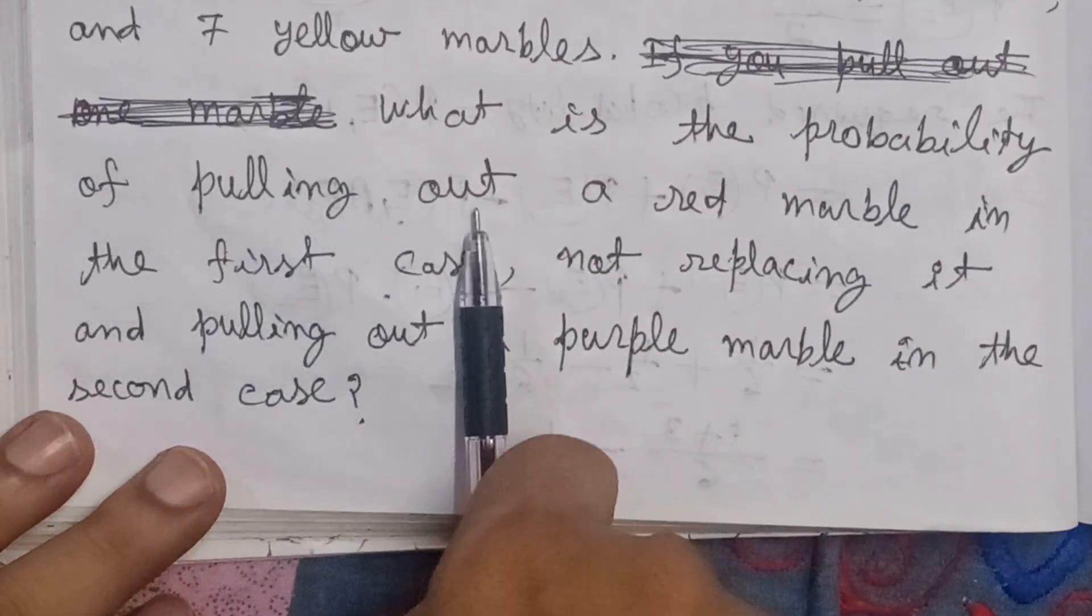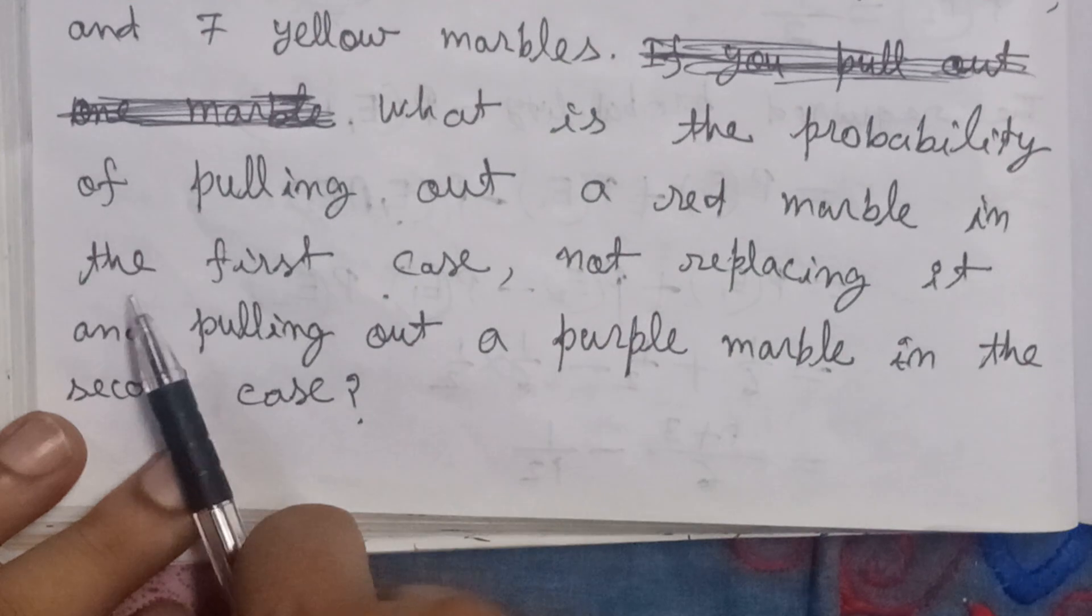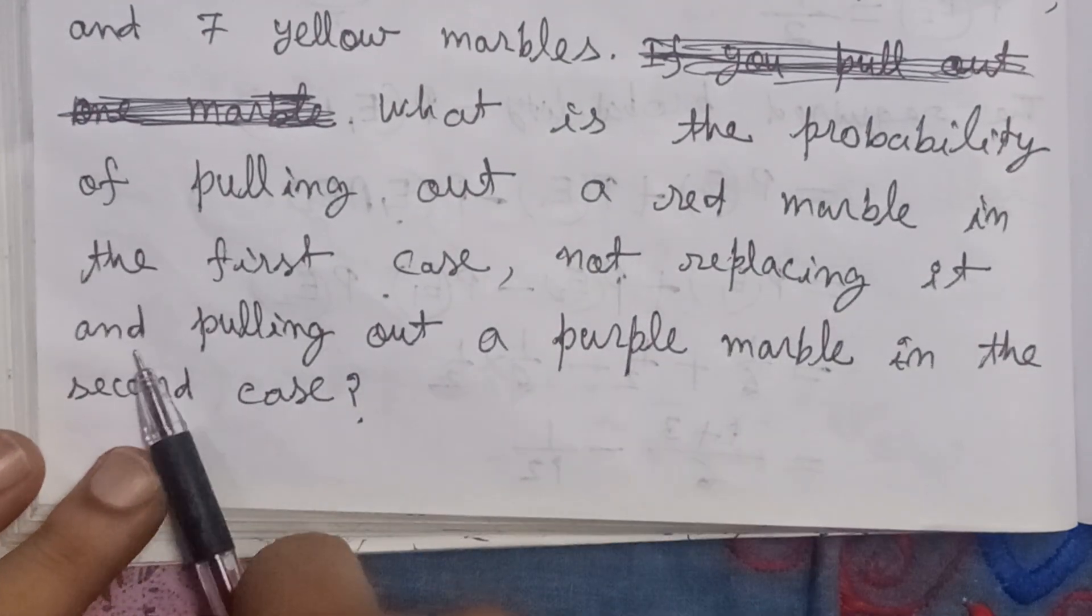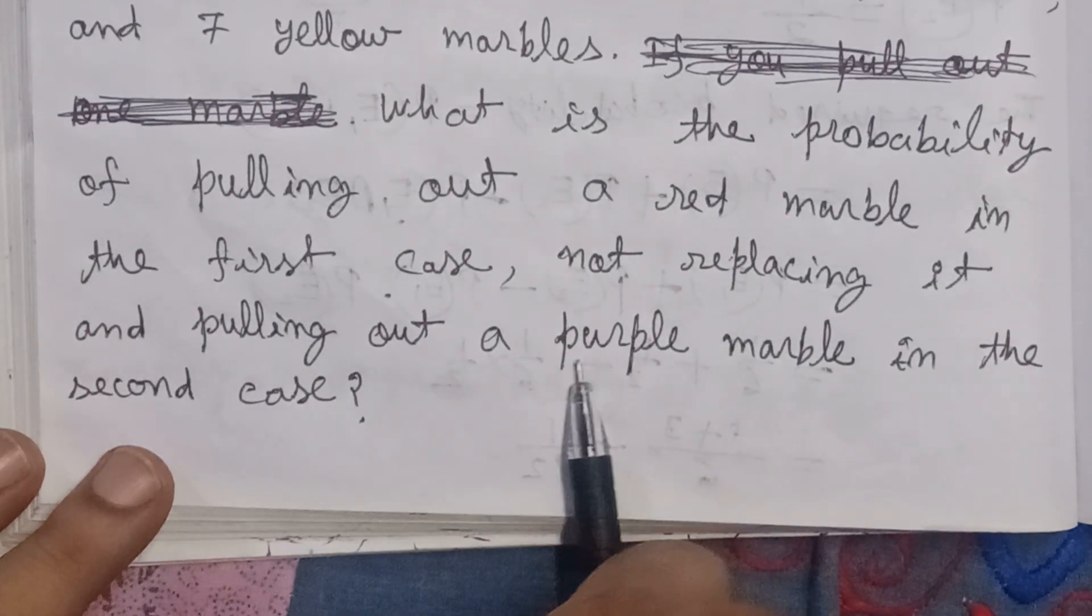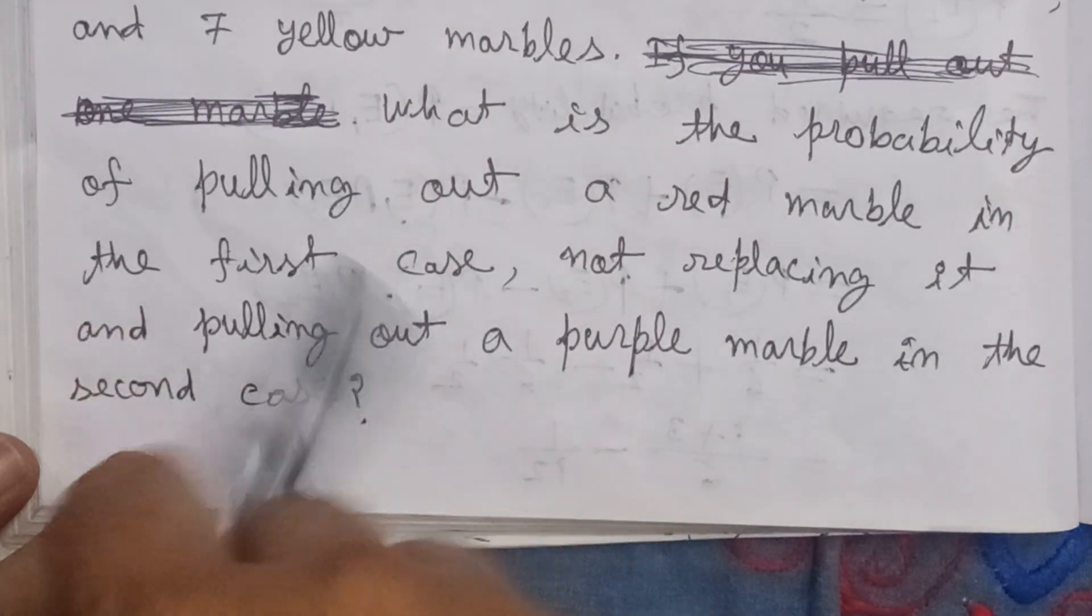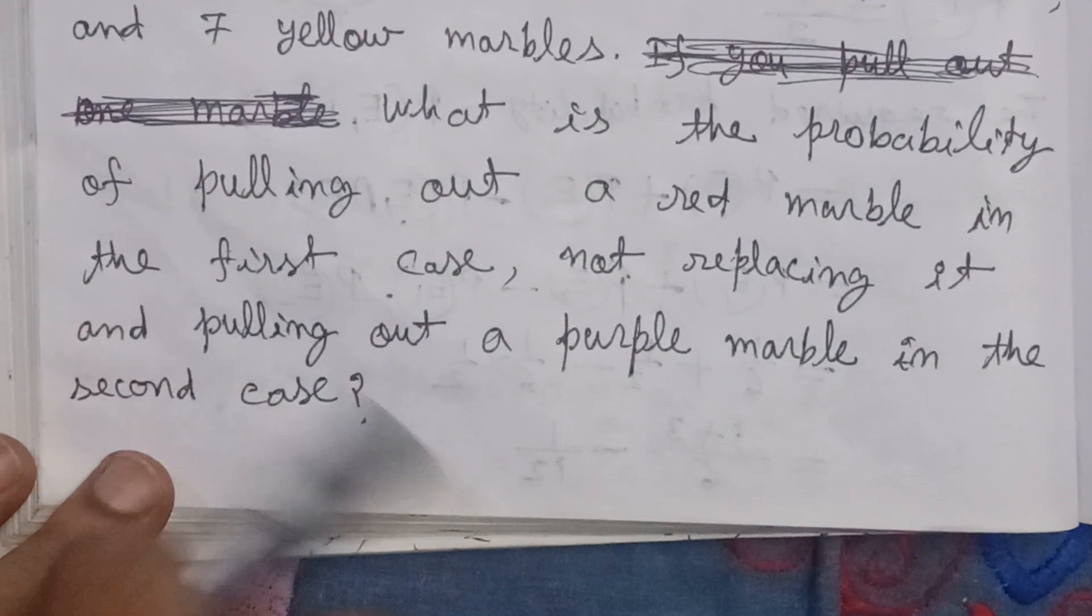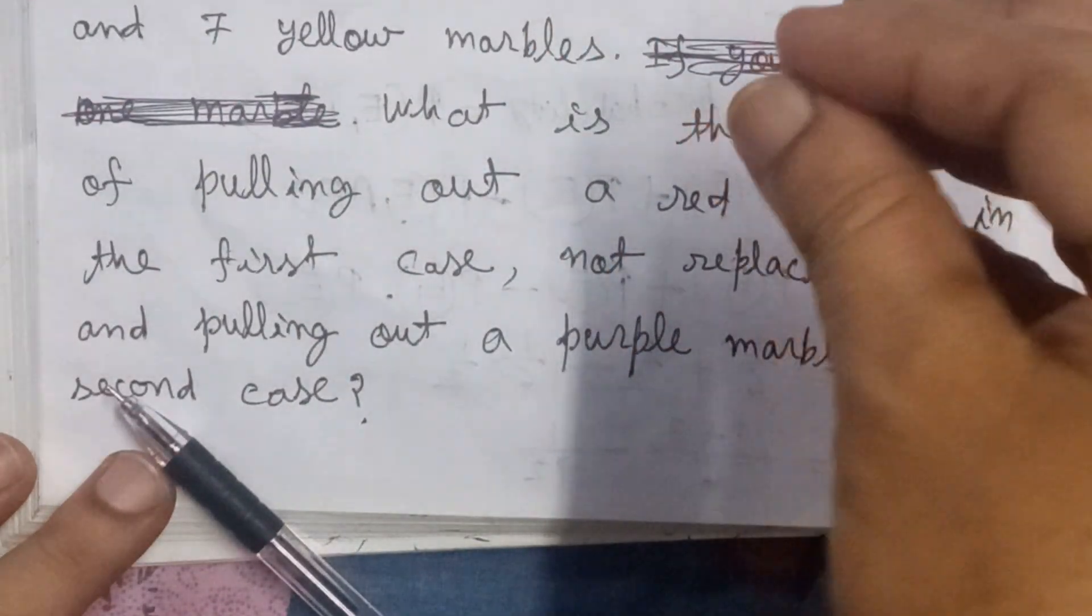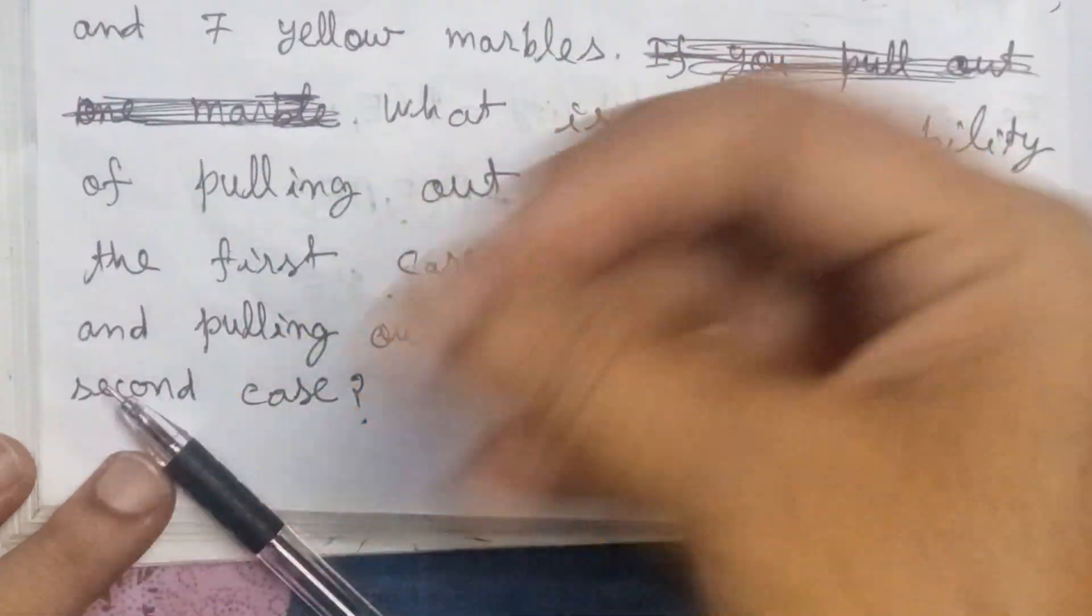of pulling out a red marble in the first case, not replacing it, and pulling out a purple marble in the second case? We need to find the probability that when we draw two marbles from the bag,